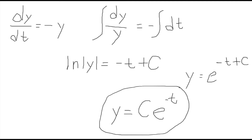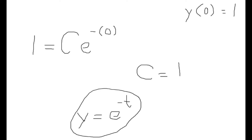Solving for dy/dt was pretty easy. All I had to do was use separation of variables to find a general solution of y equals ce to the power of negative t. Then solving for y of 0 equals 1, I found that the constant c equals 1, meaning that our final solution for y is e to the power of negative t.